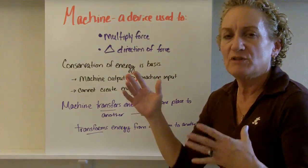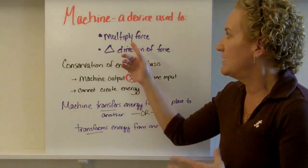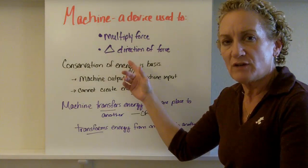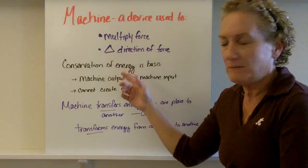First, let's define a machine. A machine is a device that does one of two things. Either it multiplies a force, or it changes direction of a force. It's got to do one of those two things in order to be considered a machine.